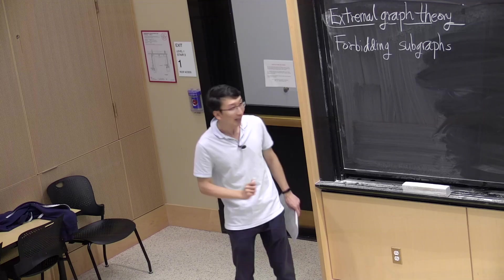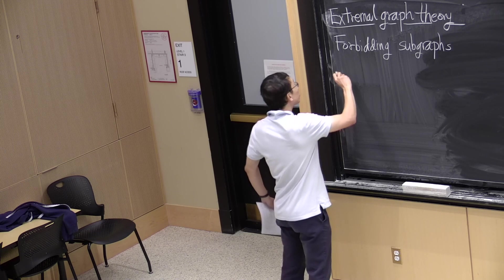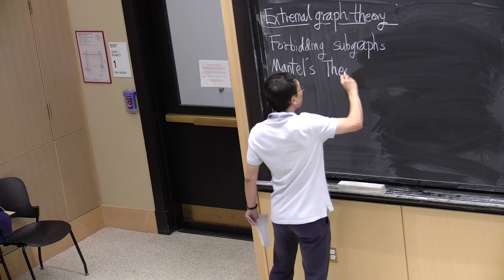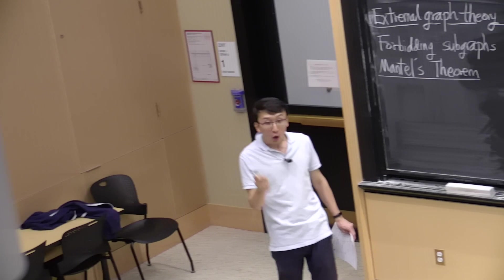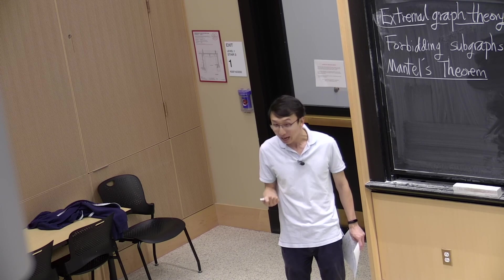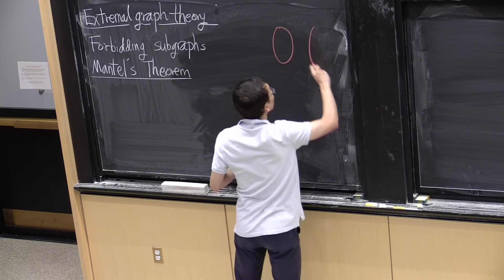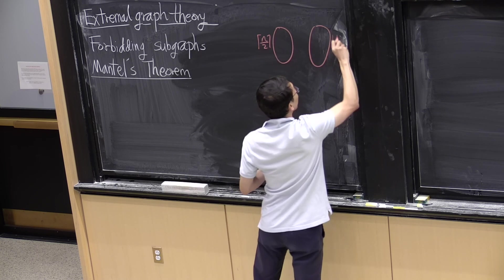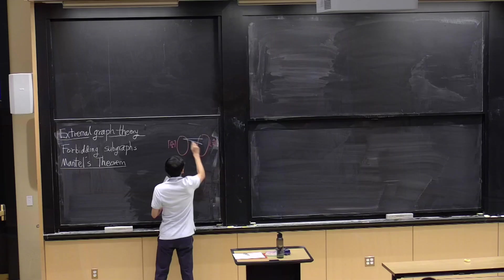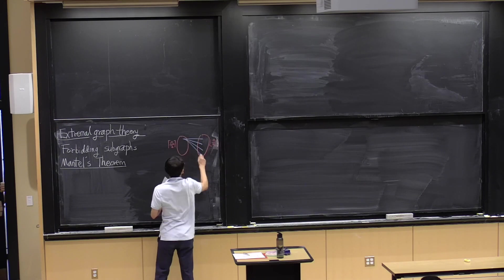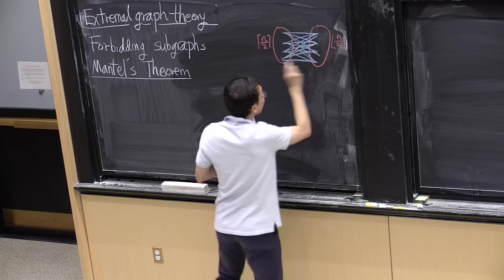In particular, this is the question we saw at the end of last lecture, which we now present as a theorem: Mantel's theorem. It essentially asks, if you know that your graph has no triangles, what's the maximum number of edges it can have? Mantel's theorem tells us the extremal example is when your graph consists of putting half the vertices on one side, half on the other side, and putting in all edges between the two sides — a complete bipartite graph.